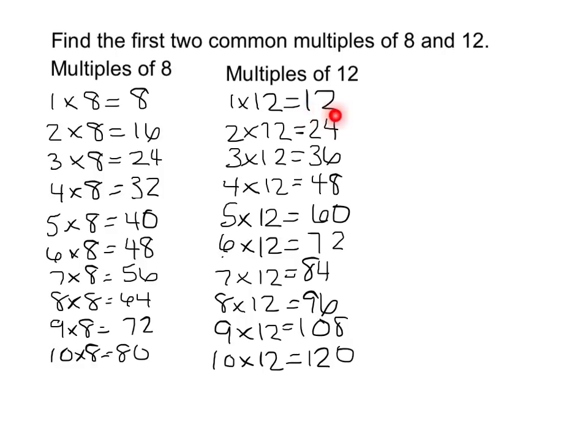Now my multiples of 12 are 12, 24, 36, 48, 60, 72, 84, 96, 108, and 120. So we need to look to see which multiples are in both the list of multiples of 8 and my multiples of 12.